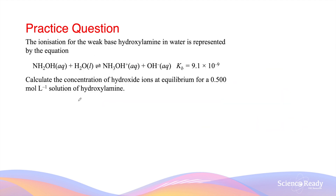What about the ionization of a weak base? A very important difference between a base and an acid is that a weak base produces hydroxide ions as opposed to hydrogen or hydronium ions. Similarly, a weak base's ionization also reaches an equilibrium as it is a reversible reaction, and we characterize this equilibrium by the equilibrium constant Kb.